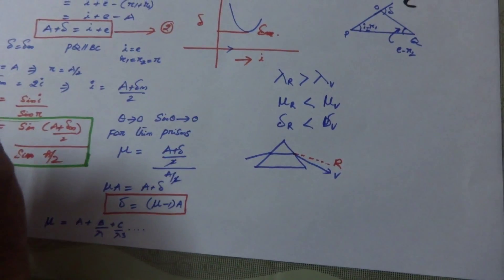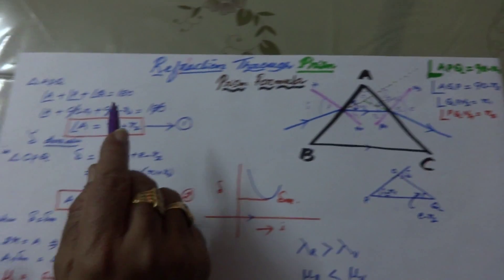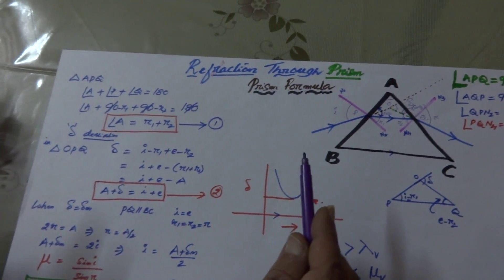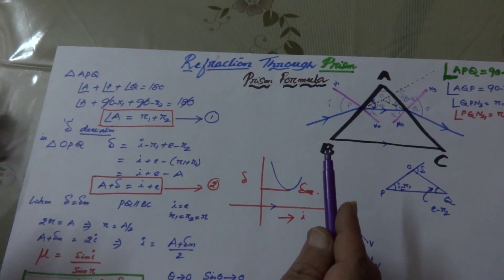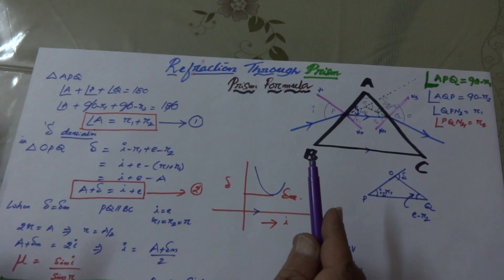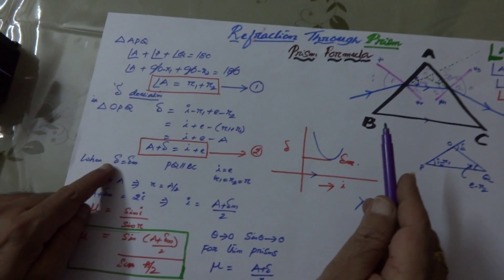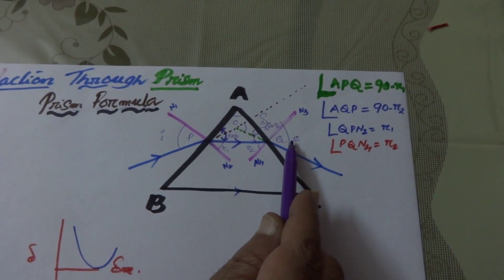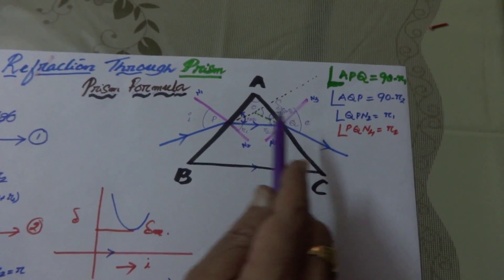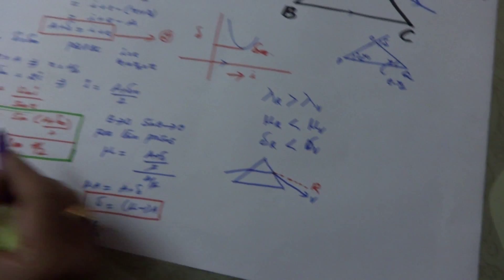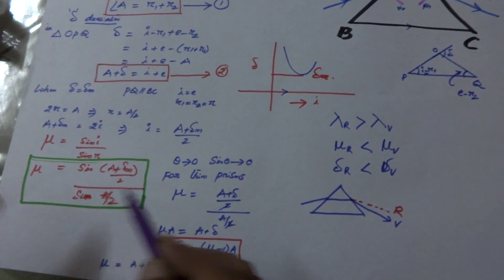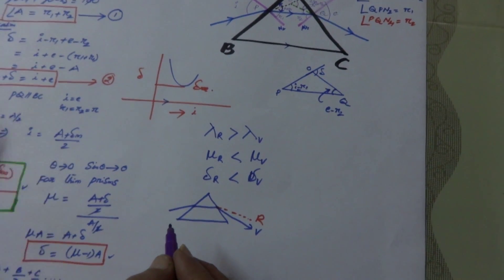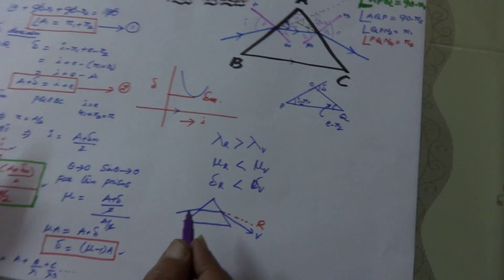In this topic we have studied the refraction through prism. We drew the sketch, and using two simple geometrical facts — the sum of three angles of a triangle is 180, and the exterior angle equals the sum of two interior angles — we derived the prism formula. When delta equals delta minimum, r1 and r2 are equal, and angle of incidence and angle of emergence are also equal. With this we derived the formula: μ = sin((A + δm)/2) / sin(A/2). We will practice some numericals based on these formulas in the coming session.